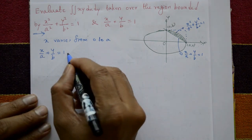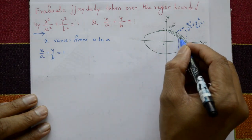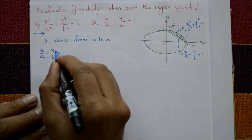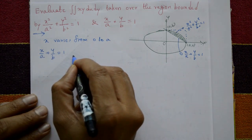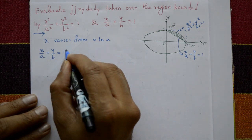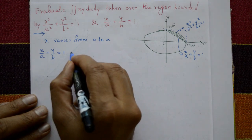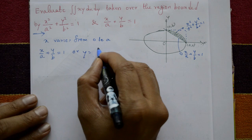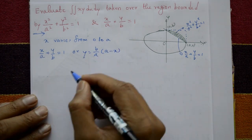From the straight line x/a + y/b = 1, shifting x/a to the right-hand side: y/b = 1 − x/a = (a − x)/a. Cross-multiplying by b gives y = b/a · (a − x). This is the first curve (straight line).